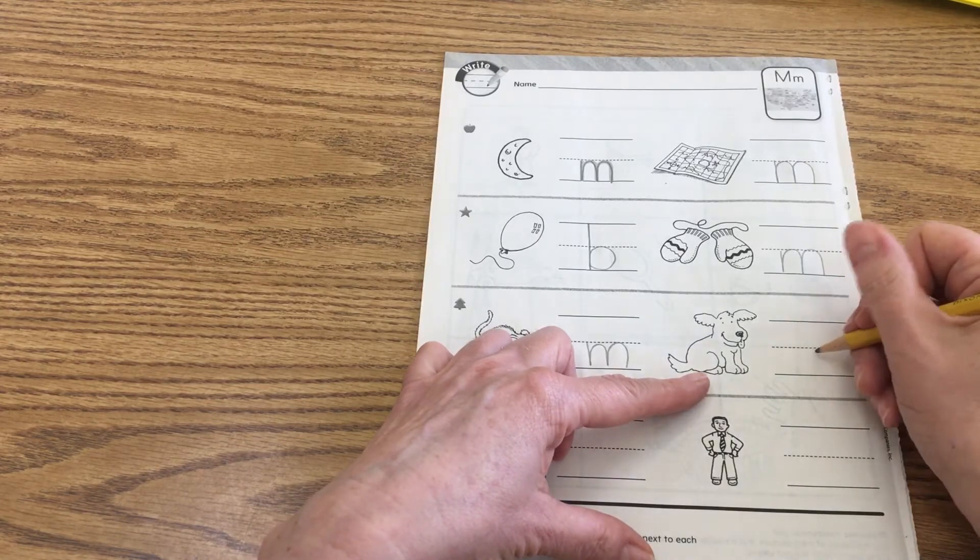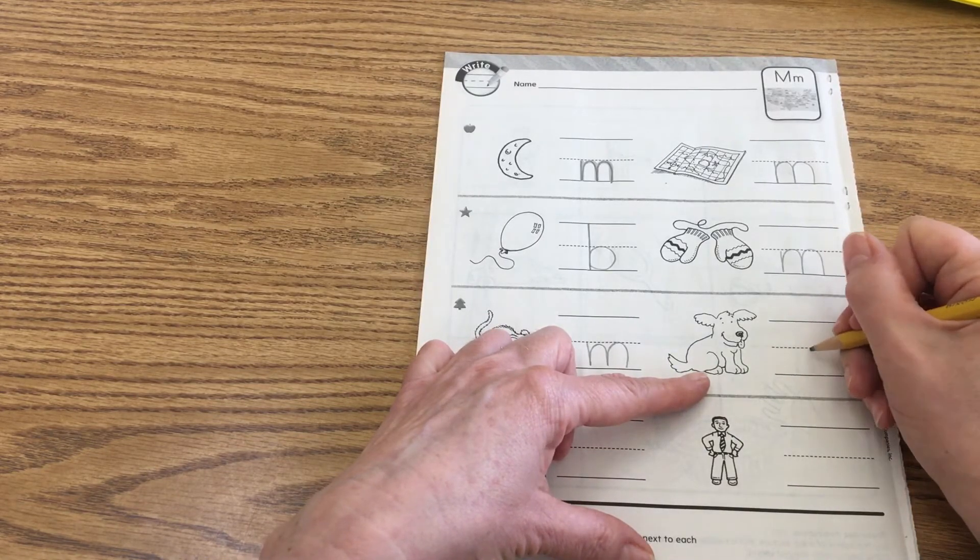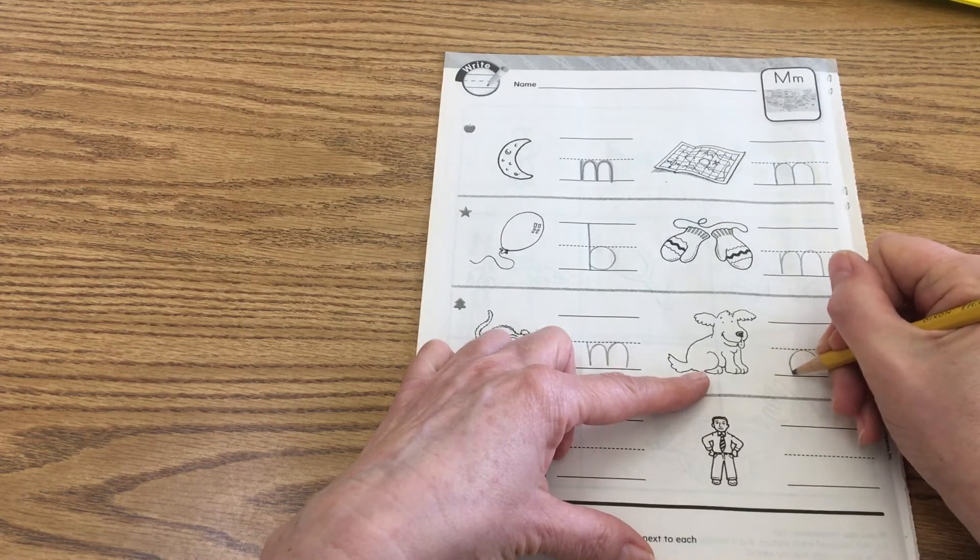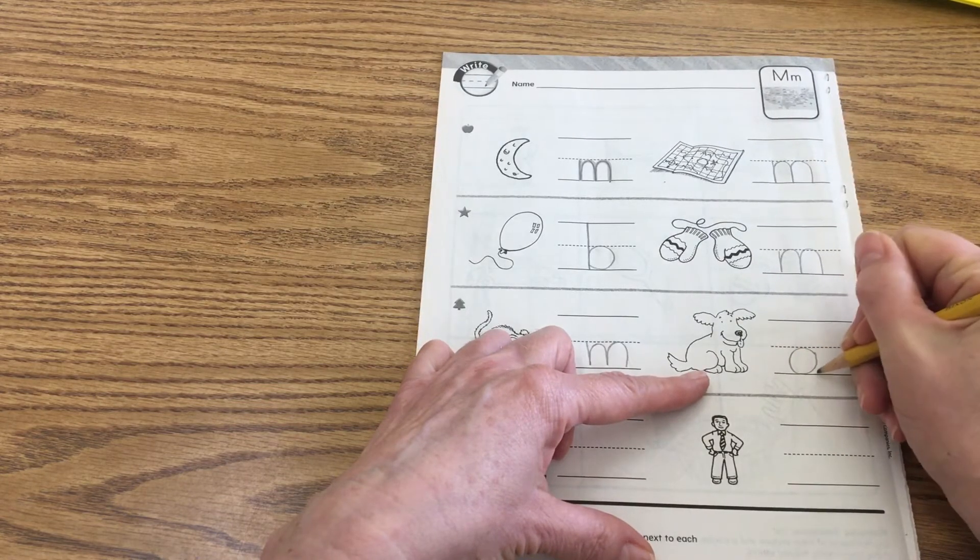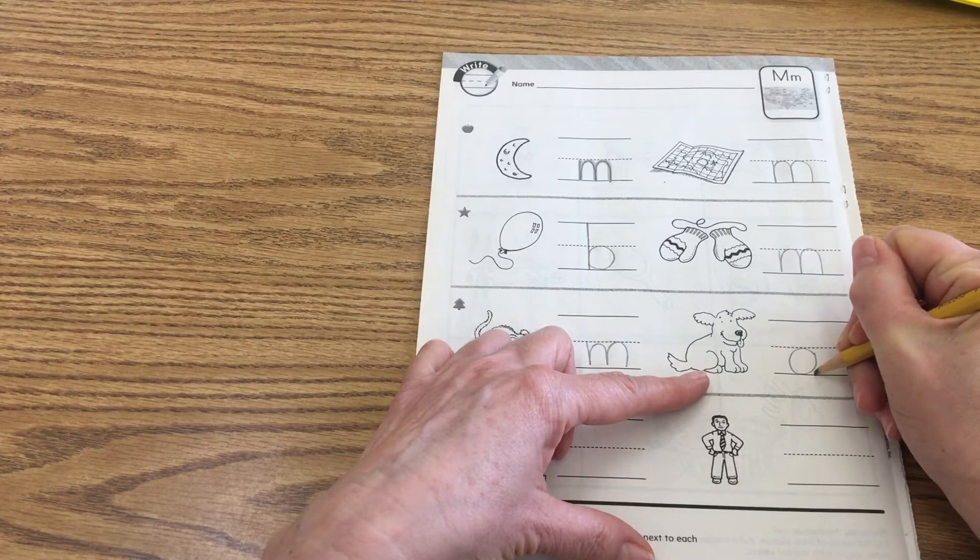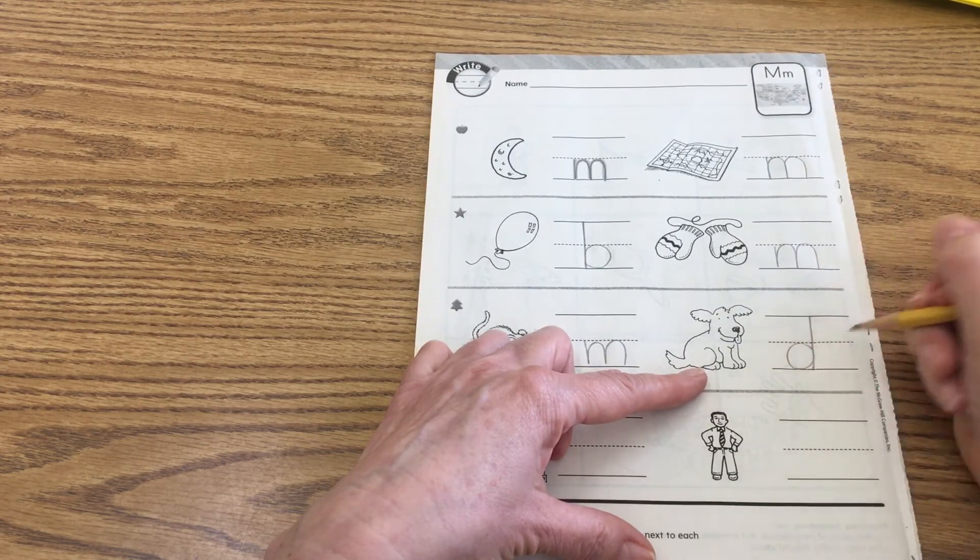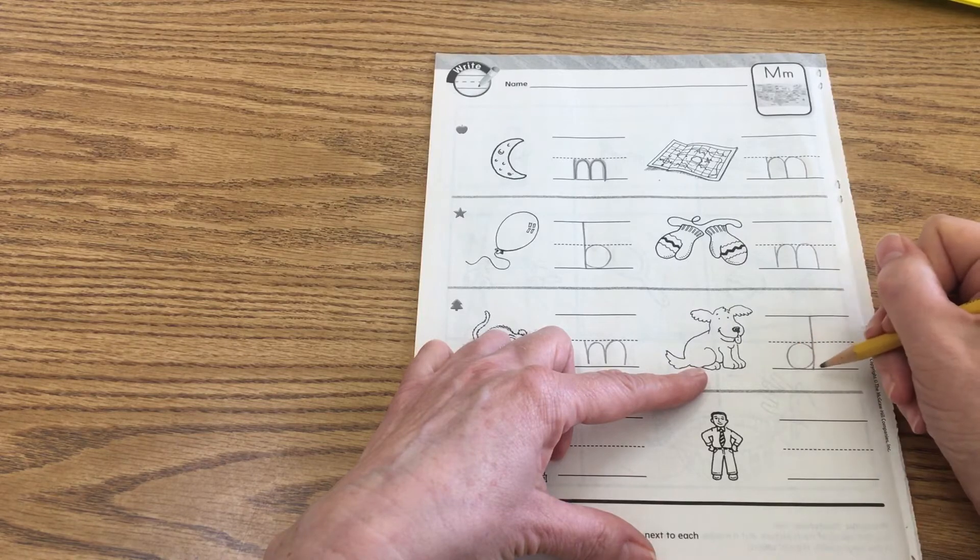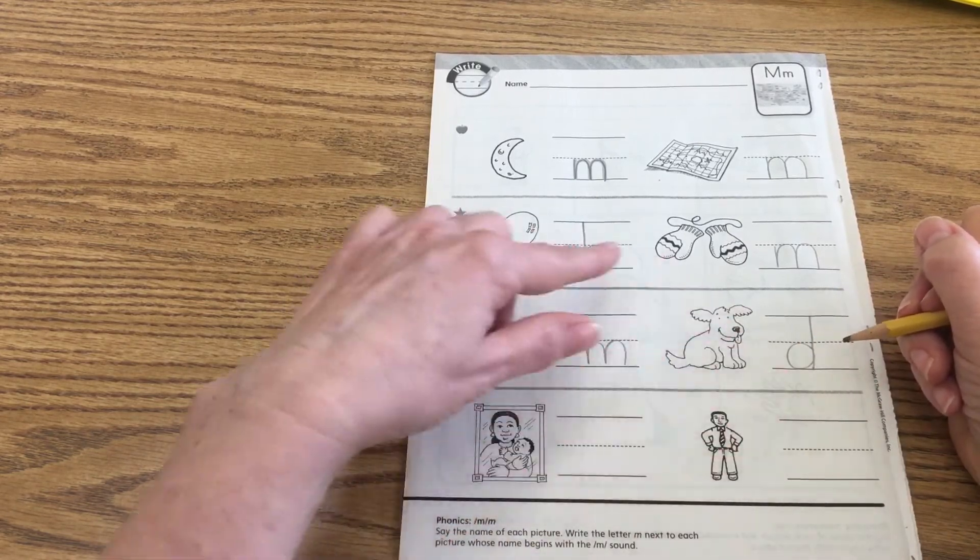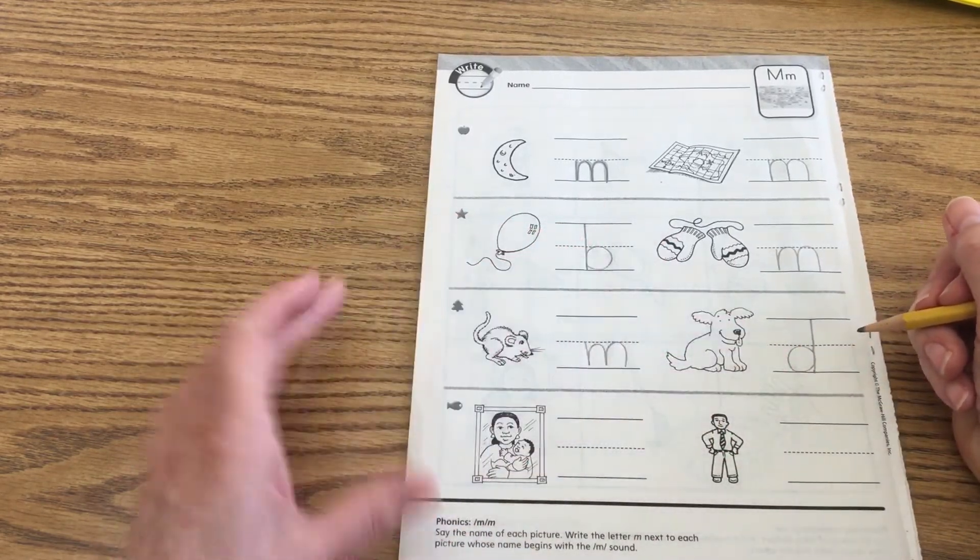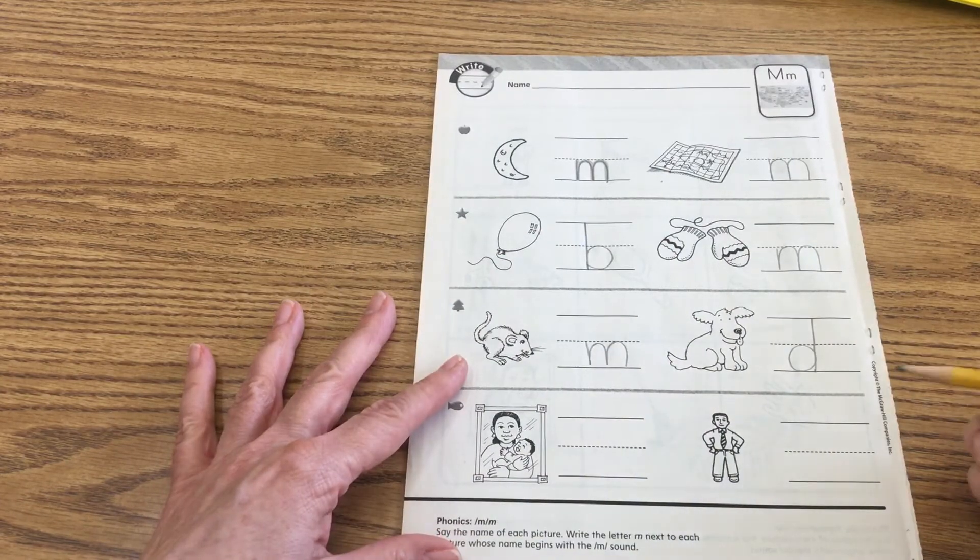And then over here we have a dog. Duh, duh, dog. So let me show you. That's with the letter D. When you're writing a D, I always write my diaper first. This is like a big round circle that I pretend is a diaper. And then I put my stick. So D has a big diaper, and that diaper comes first. So that's how I remember which way a D goes and which way a B goes, okay? Okay?